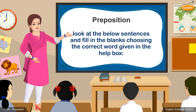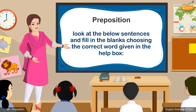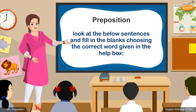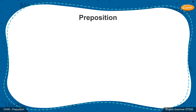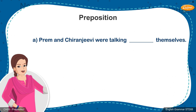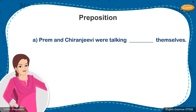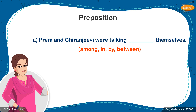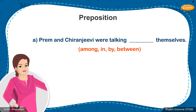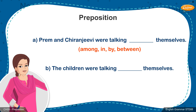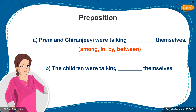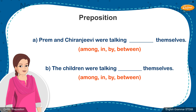Friends, look at the below sentences and fill in the blanks choosing the correct word given in the help box. A. Prem and Chiranjeevi were talking, dash, themselves. Among, in, by, between. B. The children were talking, dash, themselves. Among, in, by, between.